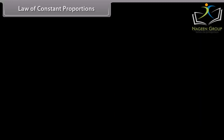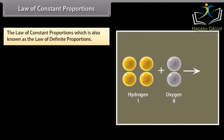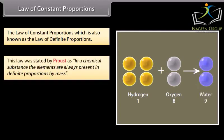Law of constant proportions, which is also known as the law of definite proportions. This law was stated by Proust as in a chemical substance, the elements are always present in definite proportions by mass.